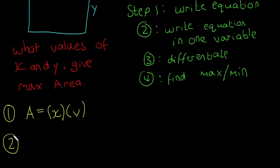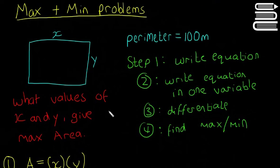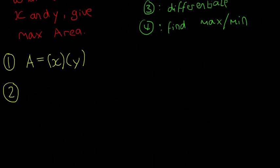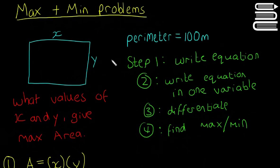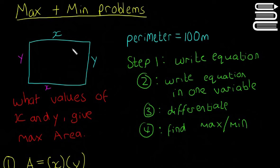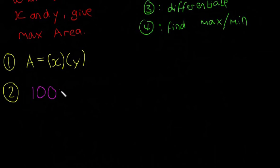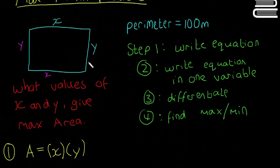Step two is to write the equation in one variable — this is normally the most important part. You need to find y in terms of x. Generally, the question gives you one piece of information that lets you do this. Here, that piece of information is that the perimeter equals 100 meters. The perimeter is x plus x plus y plus y, so: 100 equals 2x plus 2y.